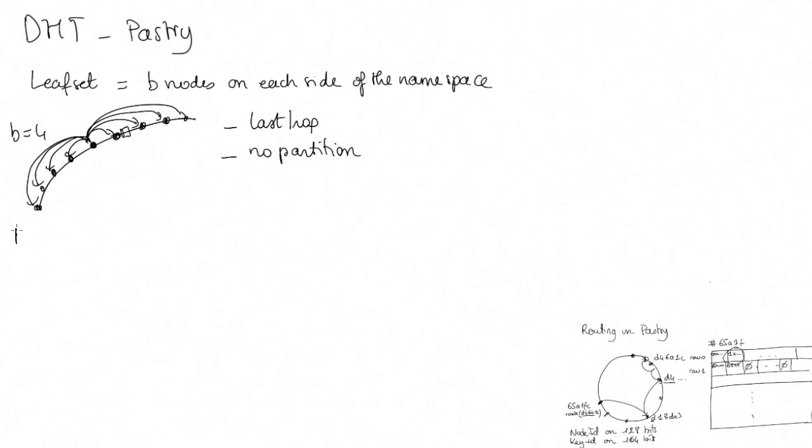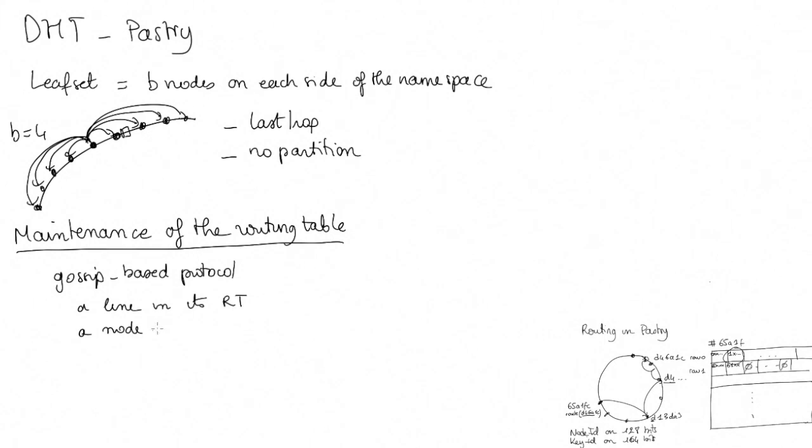The question is how to maintain the routing table in the presence of dynamics. The first tool that exists in Pastry is that periodically, each node uses a gossip-based protocol to exchange some nodes. Periodically, each node picks at random a line in its routing table, then a node in that line, and those two nodes exchange their entire line of the routing table. If one node had an empty cell, it can then take the equivalent node from the other node after the exchange.